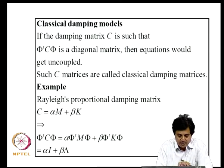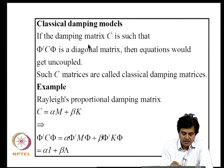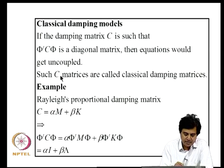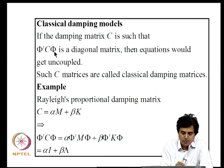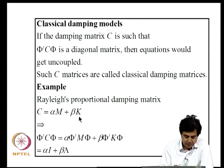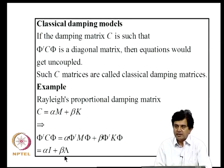In classical damping models, we restrict the damping matrix C to those matrices where Phi-transpose·C·Phi is diagonal. Such damping matrices are called classical. The undamped normal modes diagonalize C as well. An example is Rayleigh's proportional damping matrix C = alpha·M + beta·K. Then Phi-transpose·C·Phi = alpha·(Phi-transpose·M·Phi) + beta·(Phi-transpose·K·Phi) = alpha·I + beta·Lambda.